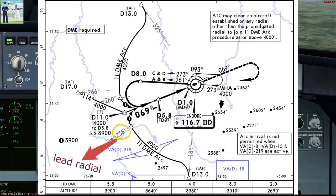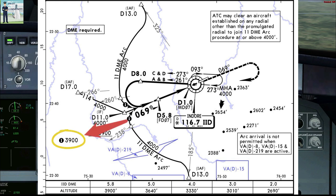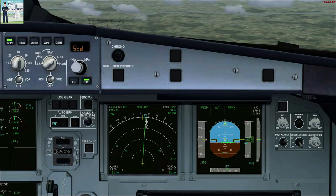Approaching the lead radial, we shall commence our turn to the right towards our final approach course of 069. The bold flag 1 indicates that during this turn we should be at our platform altitude of 3900 feet. When established on the final approach course, the procedure will be similar to as discussed earlier.